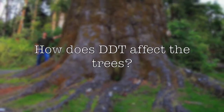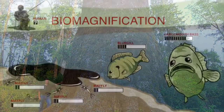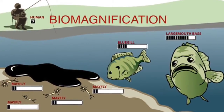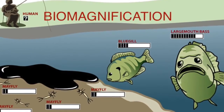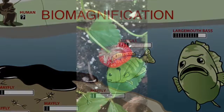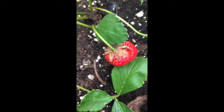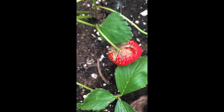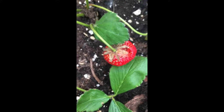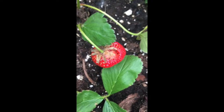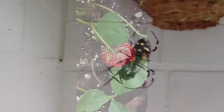How does DDT affect the trees? Well, let's start with a broader scheme: biomagnification. Biomagnification starts when a primary producer ingests a harmful compound. At this point, that substance has now entered the food web.